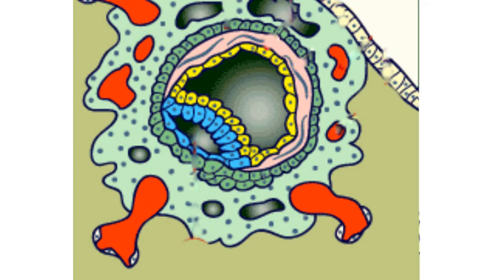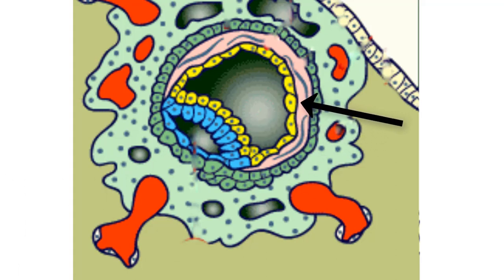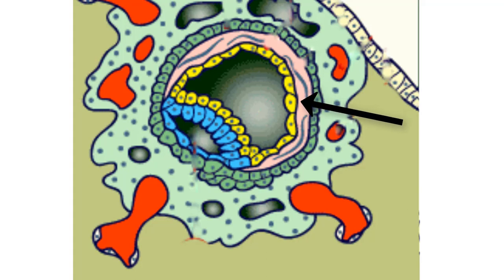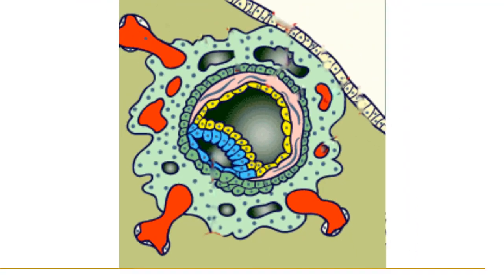In this stage, a layer of mesoderm develops between the trophoblast and the Heuser's membrane. It is called the extra-embryonic mesoderm. Since it lies outside the inner cell mass, it is called extra-embryonic mesoderm.